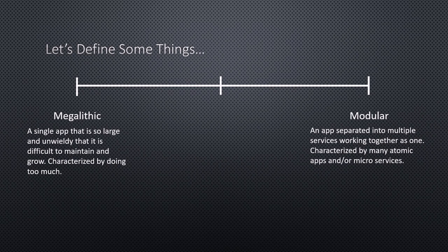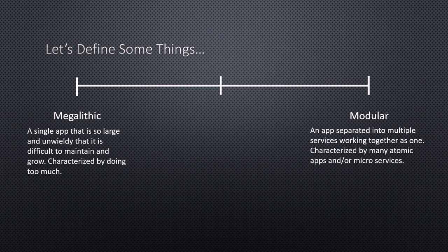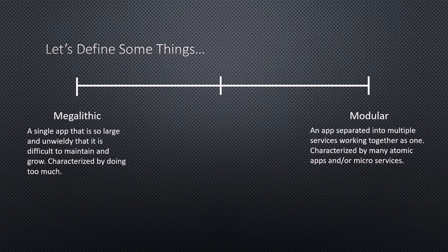On the other side of the spectrum, we have modular apps. A modular app is separated into multiple services or multiple applications. Another term for them is microservices. They're characterized by lots of little pieces — you stand up just a part of the application that handles just one thing, and another part that handles just another thing. Each of these different parts come together and work as one cohesive whole.